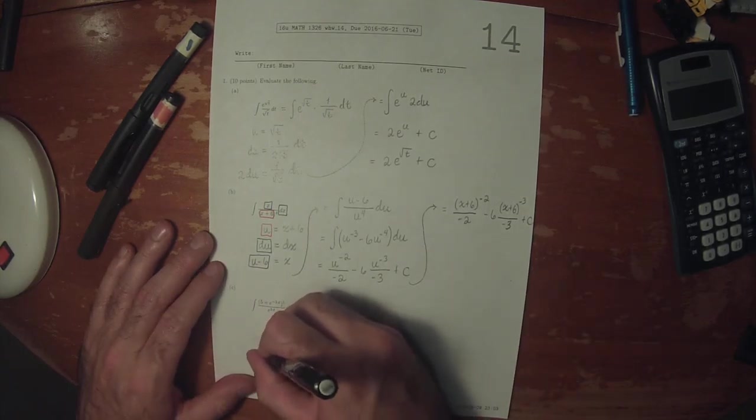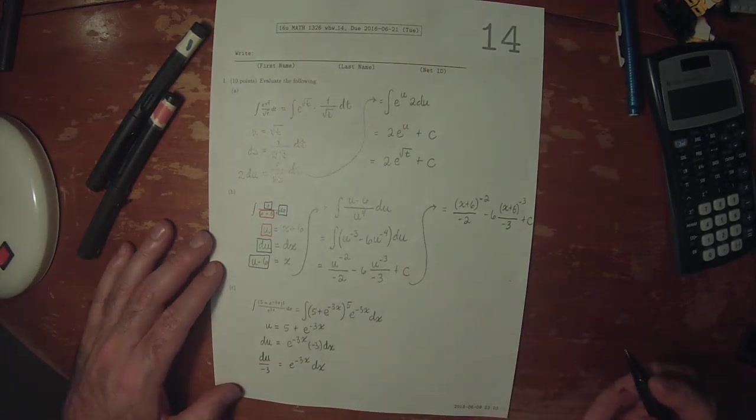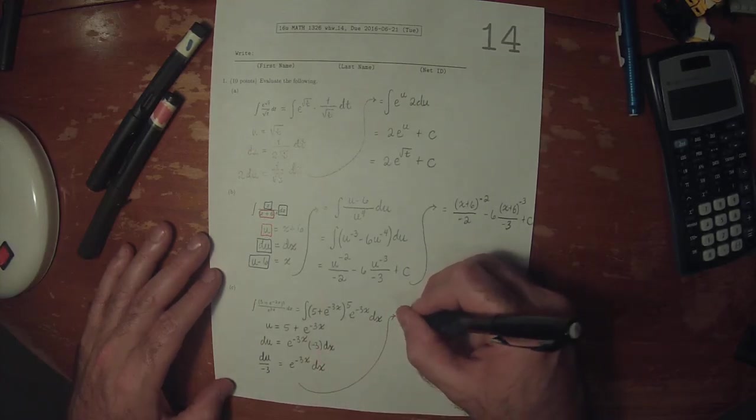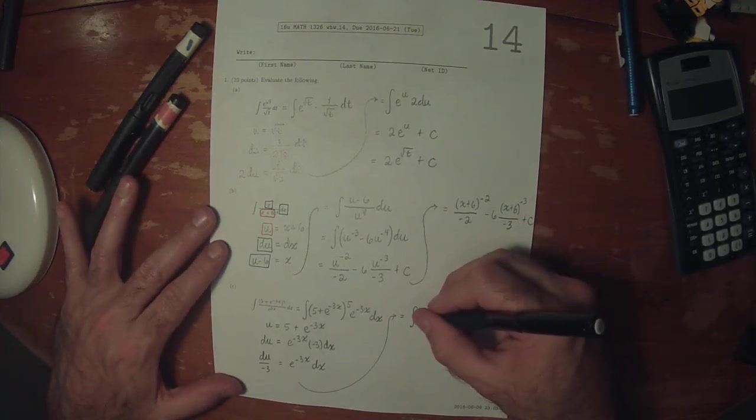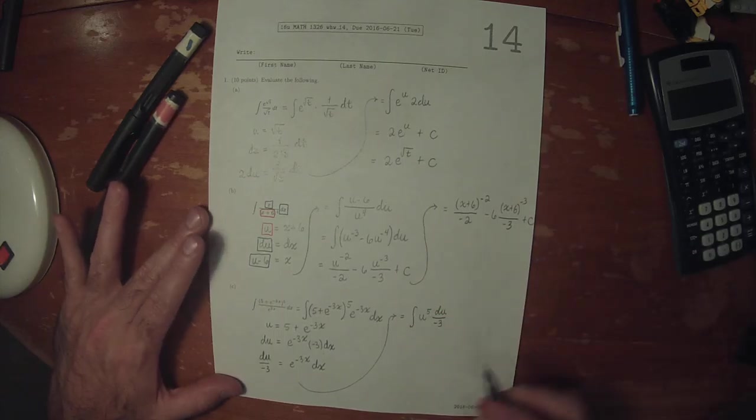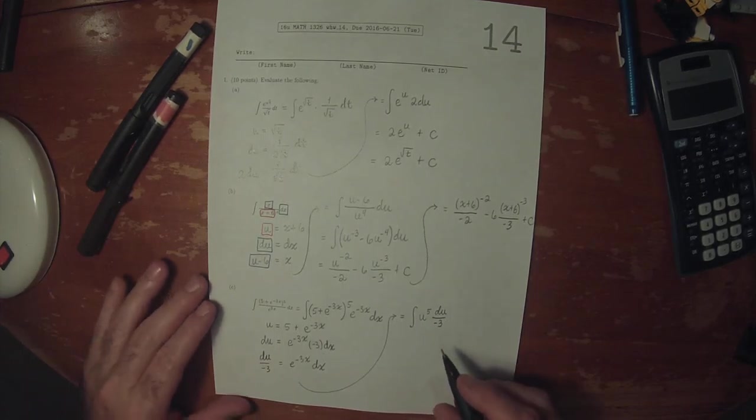So we can divide by negative 3. And that's enough to cover everything in the original antiderivative. That gives u to 5 du over negative 3. That division by negative 3 is just a constant, so it doesn't affect the antiderivative.